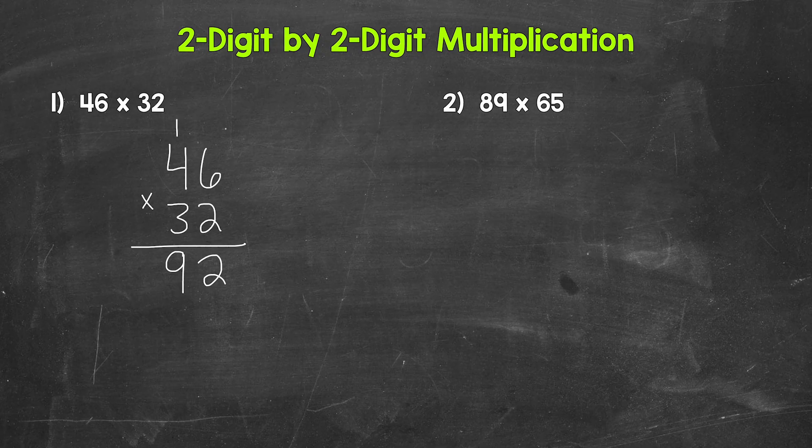We are done with this two and done with this one. I like crossing numbers off when we are done with them — that way we don't confuse them with any other numbers as we're working through the problem. It helps us stay organized.